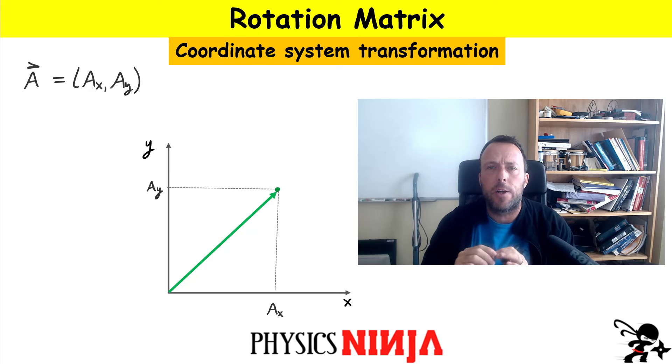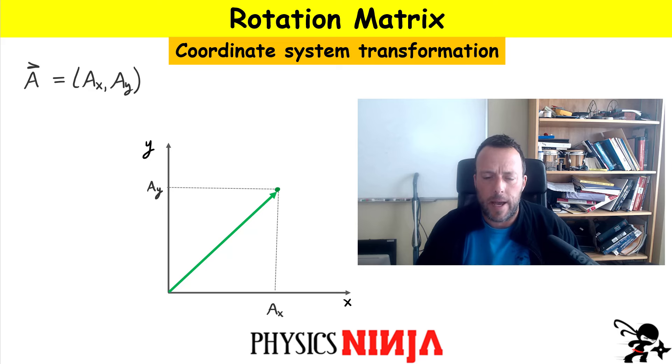Today what I want to do is look at a rotation matrix. So I'm going to assume here that we either have a vector or a point, and that point is described in terms of some coordinate system here, which I have shown X and Y.